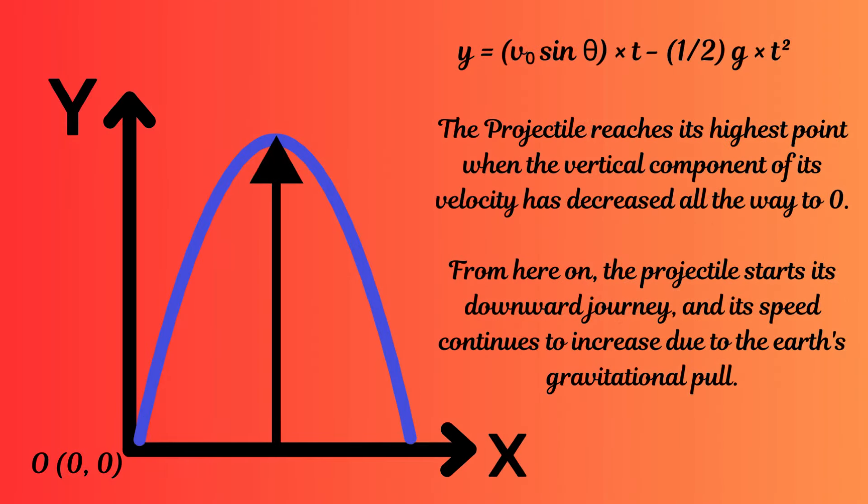Now let us analyze the vertical distance covered by the projectile. The vertical distance at any time during the trajectory is given by the vertical component of velocity — v₀ sine theta — multiplied by t, and because there is a downward acceleration, we subtract one half of g multiplied by t squared. So the vertical distance y is given by v₀ sine theta times t minus one half g t squared. We ignore the initial y coordinate because we assume the origin is the point where projectile motion begins.